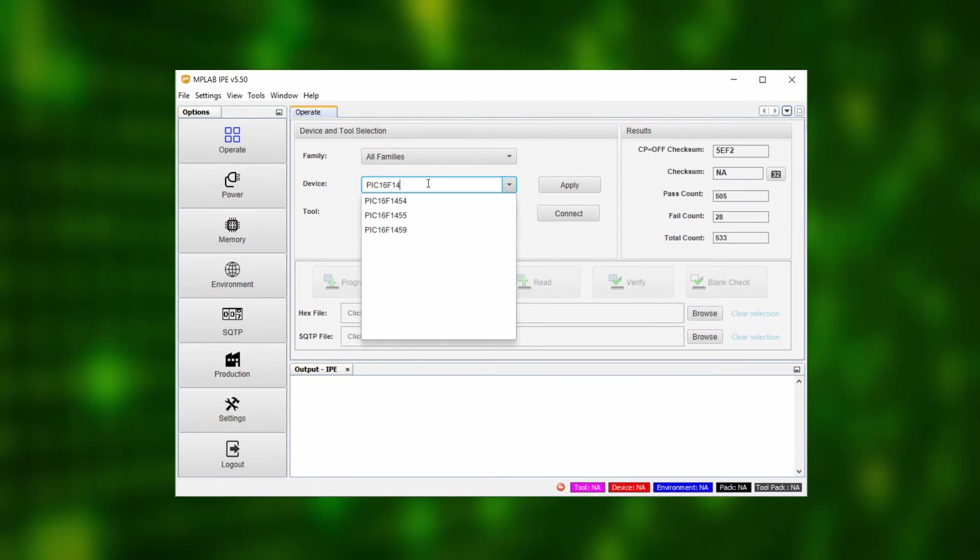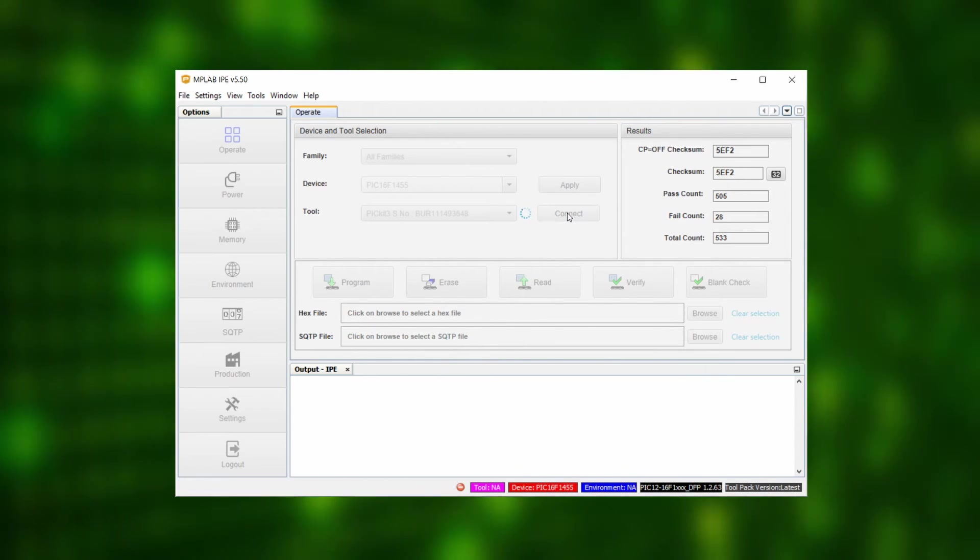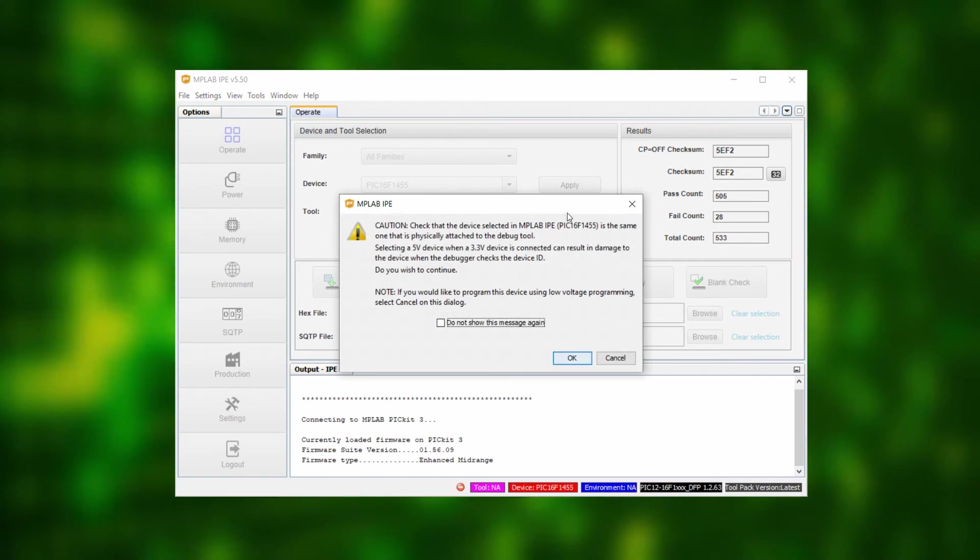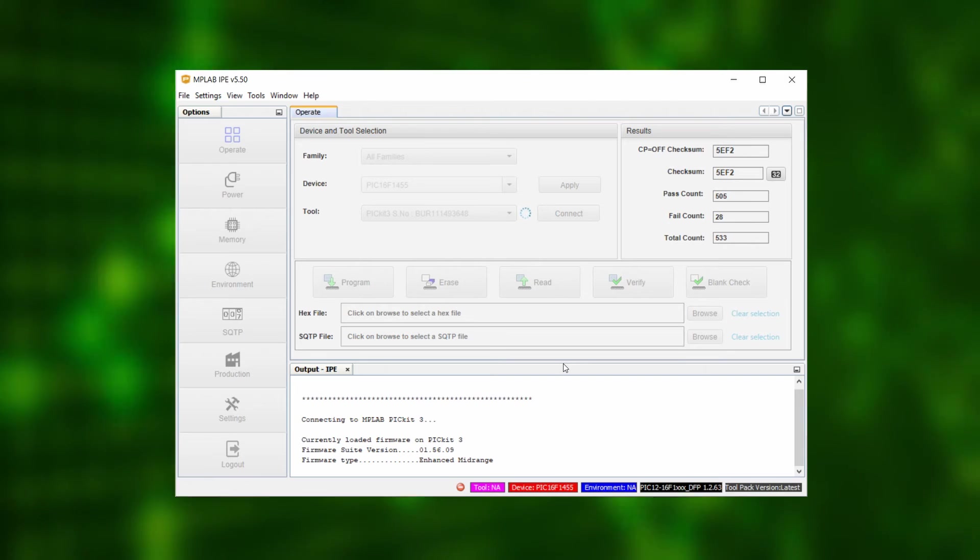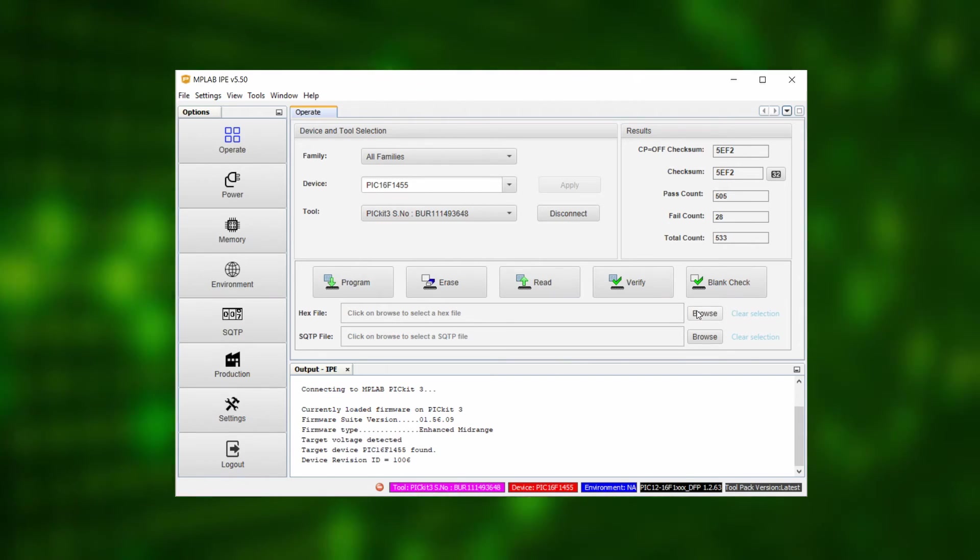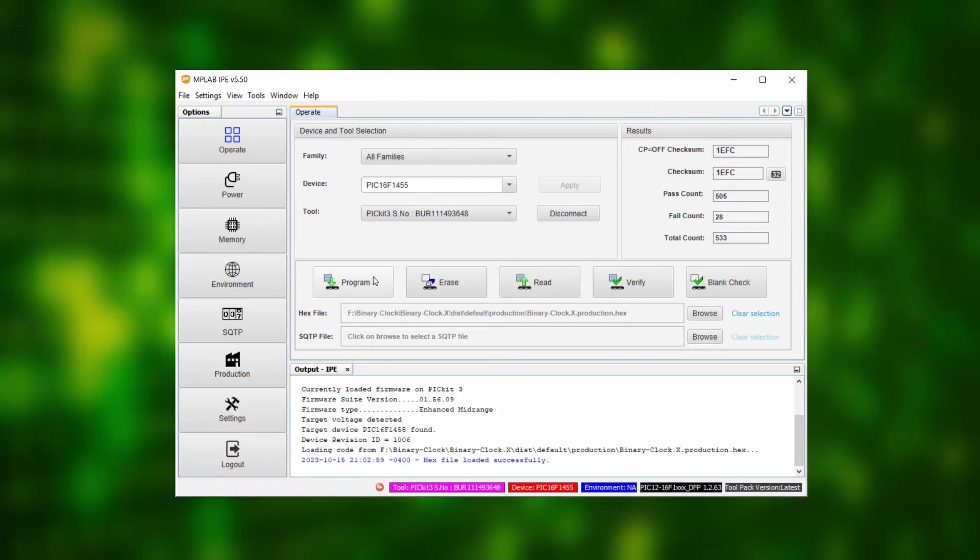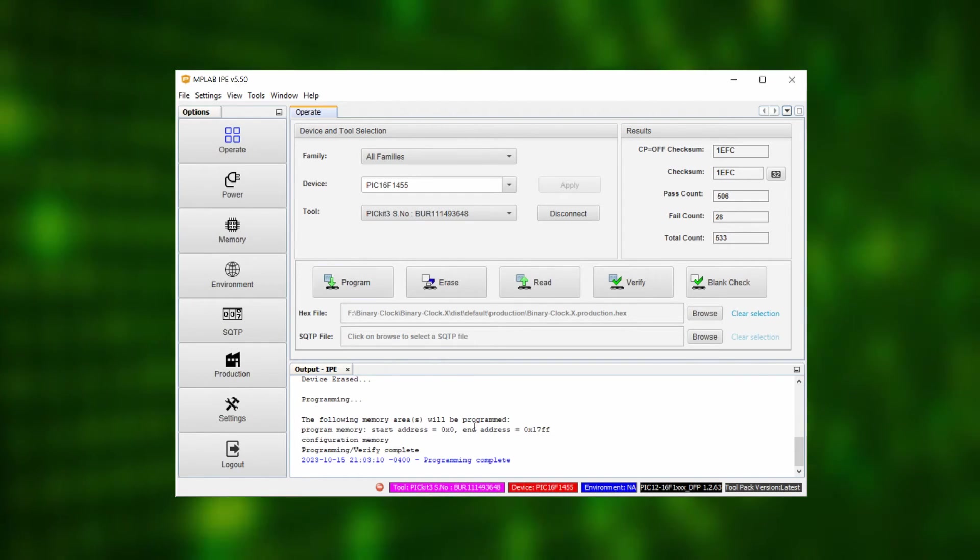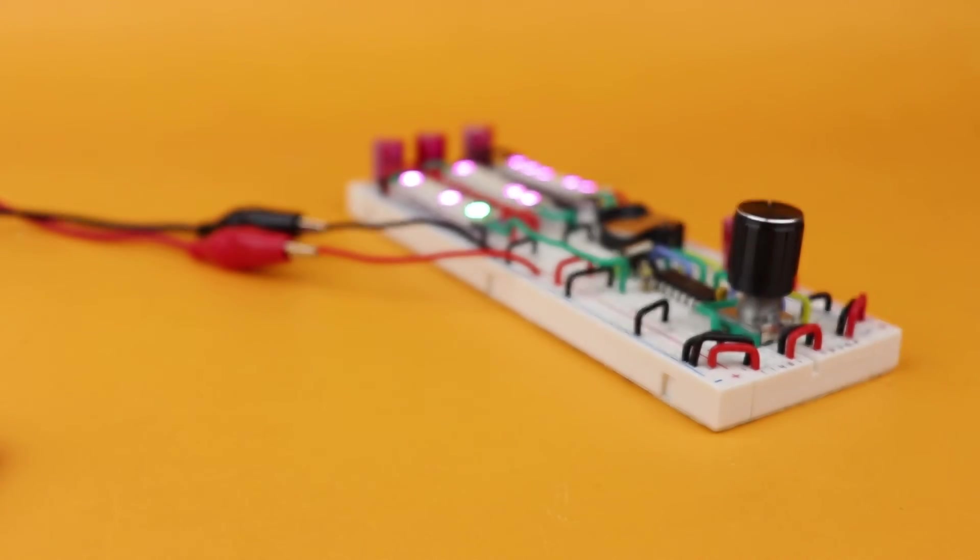Now start the MPLAB IPE. Select the PIC16F1455 as our device and the PICkit 3 as our tool in the settings and then click on connect. After a few seconds, the PIC16F1455 should be detected. In the hex file line, click on browse and open the hex file we just created. Click on the program symbol and after a few seconds we are done. You can now remove the wires from the PICkit 3 and your binary clock is ready to go.